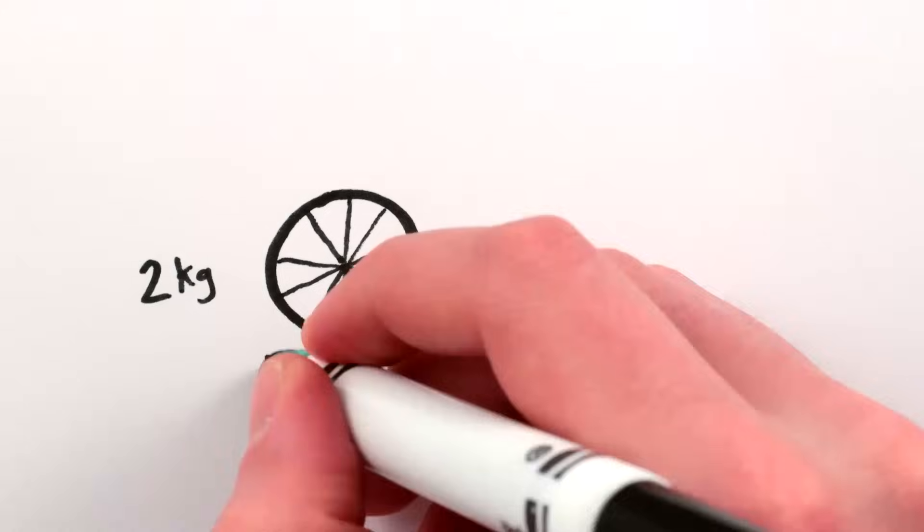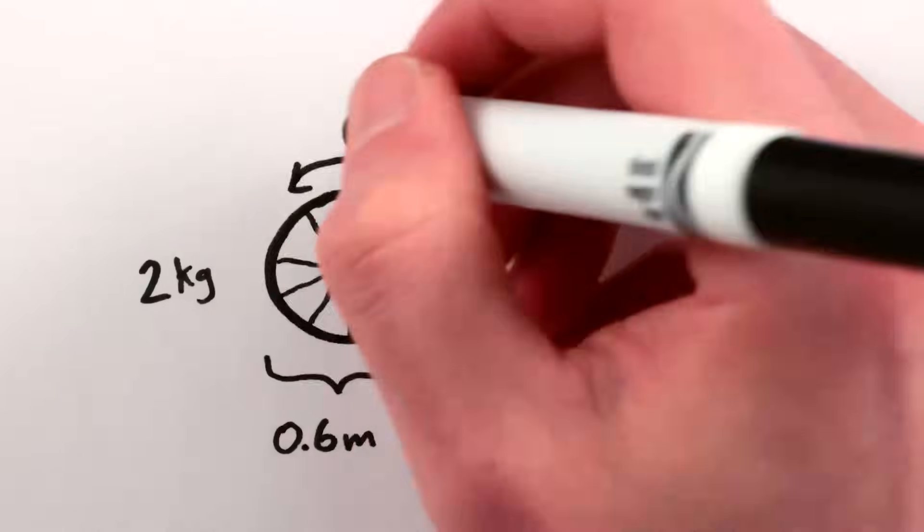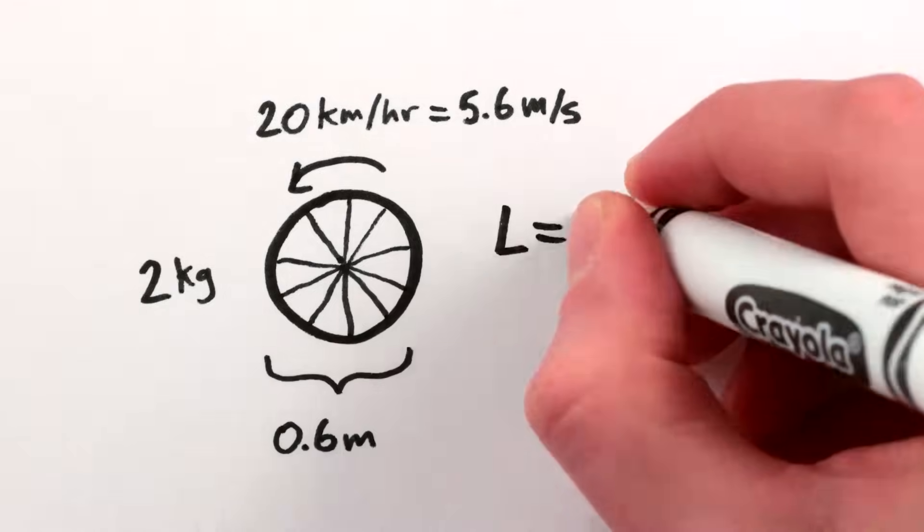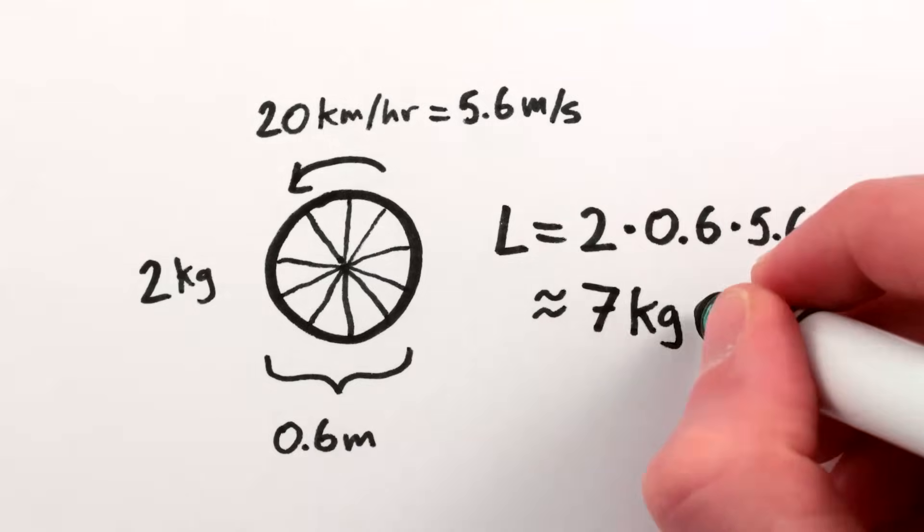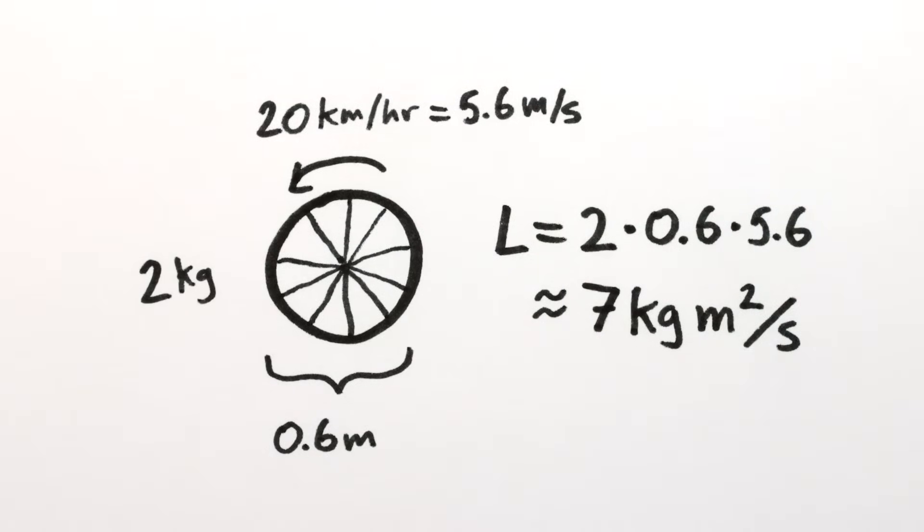For example, a 2 kilogram, 60 centimeter diameter bicycle wheel going 20 kilometers per hour would have an angular momentum of about 7 kilogram meters squared per second. Is that useful to know?